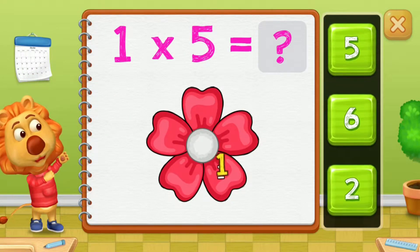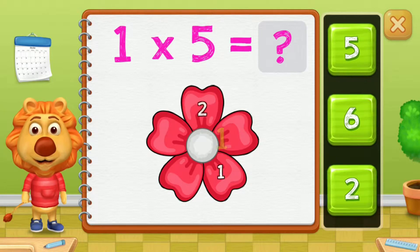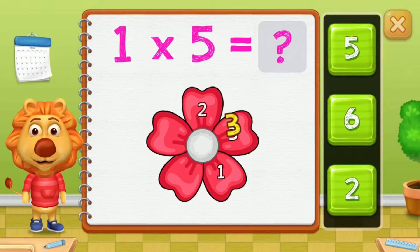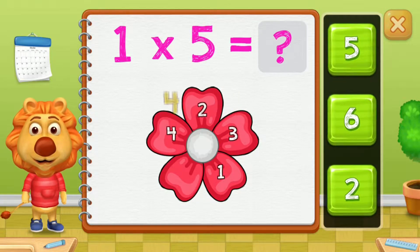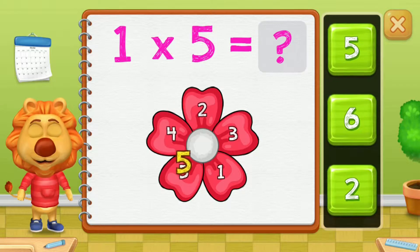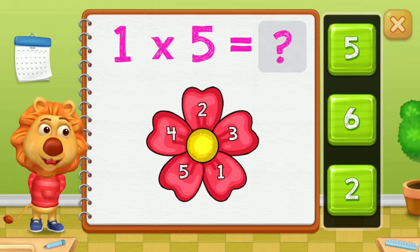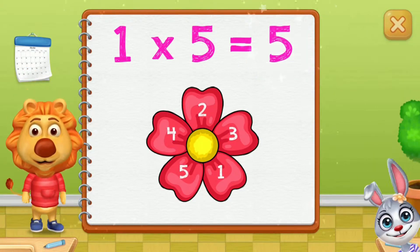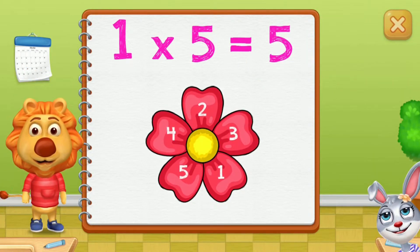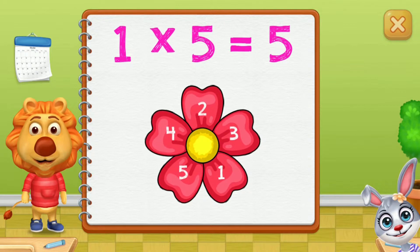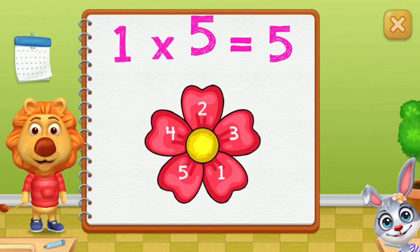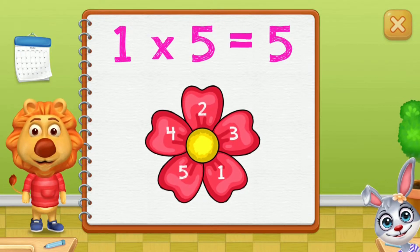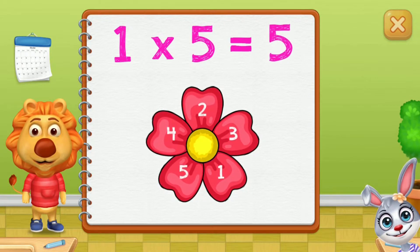One, two, three, four, five. One group of five equals five.